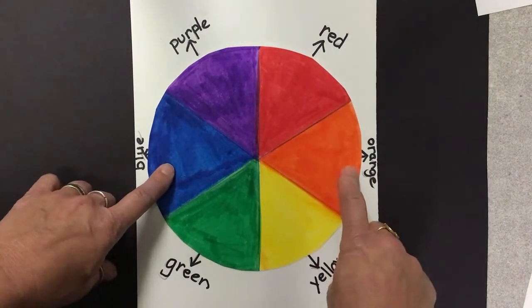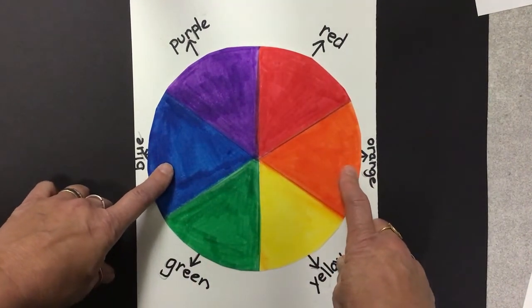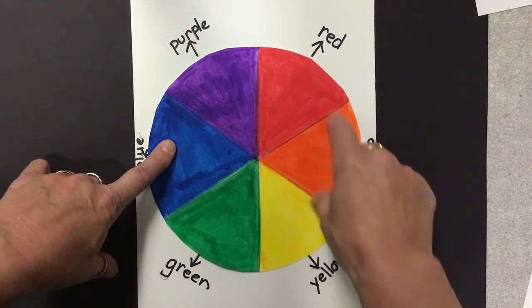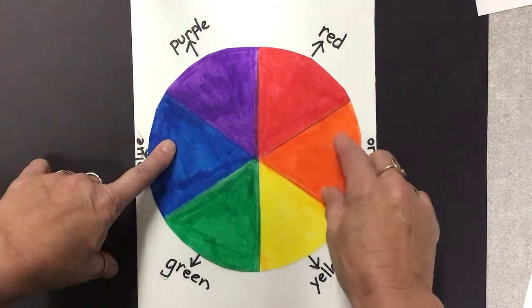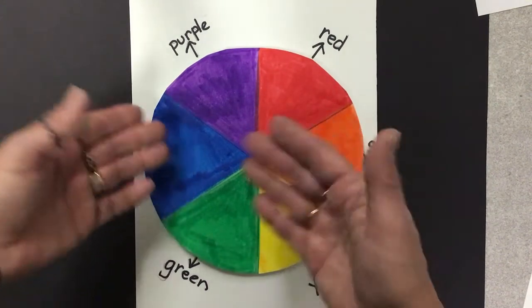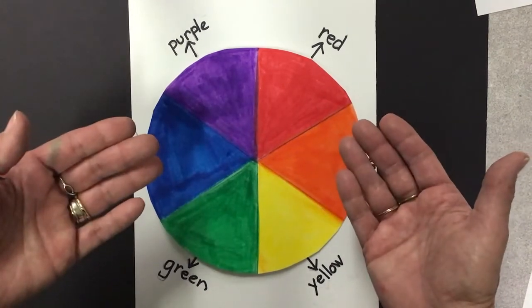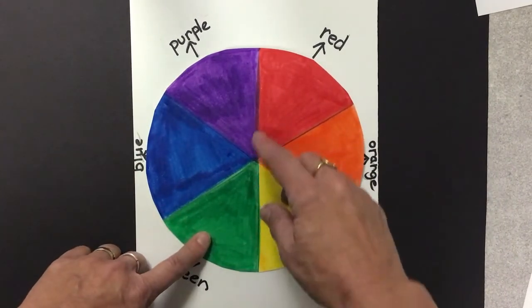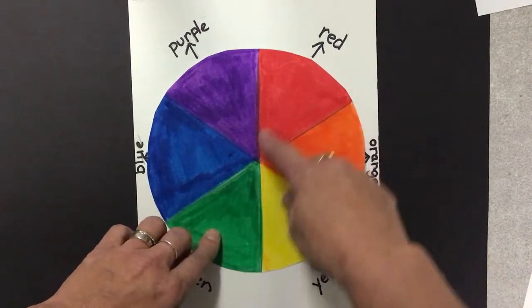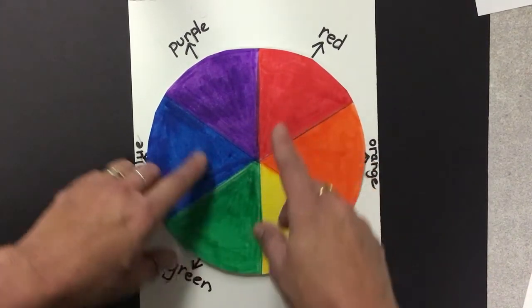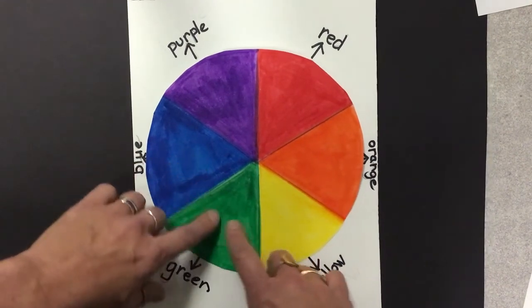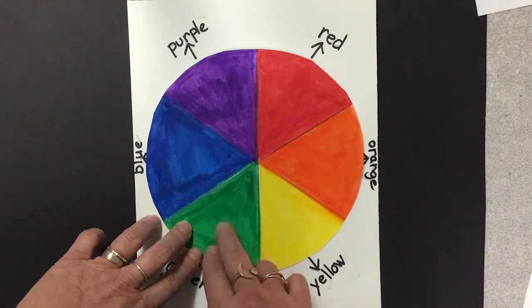Blue and orange also are complementary colors. Blue is a primary color, and orange is made with red and yellow mixed together. So they're very different from each other. They make each other stand out because they're so different. They contrast each other. And then red and green are also complementary colors. They're opposite each other on the color wheel. Red is a primary color, and green is made by mixing blue and yellow together. So they are complete opposites.